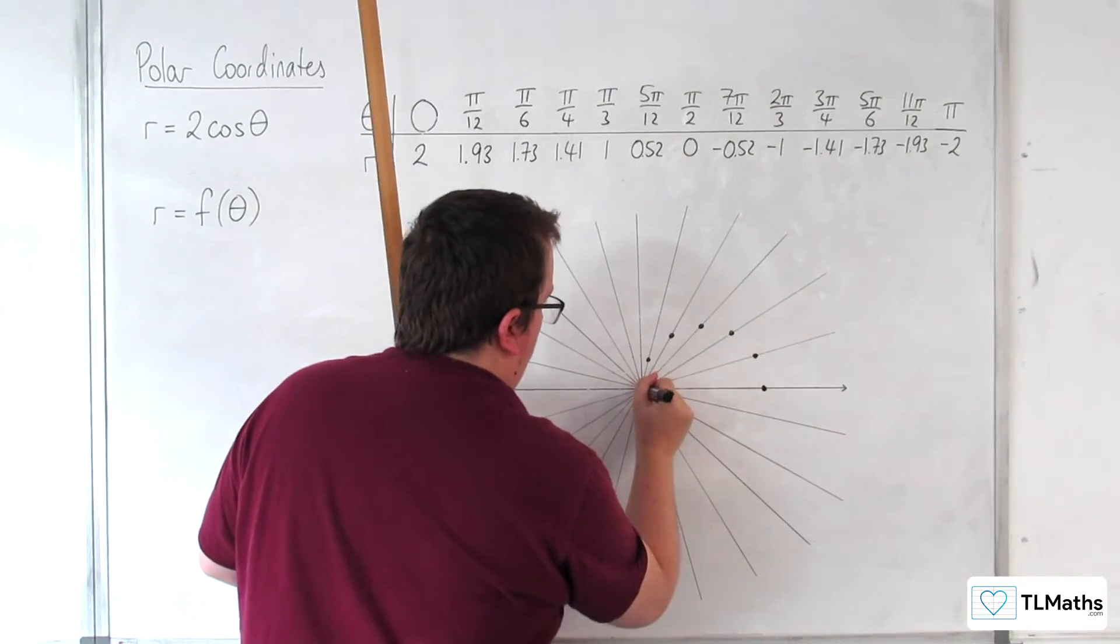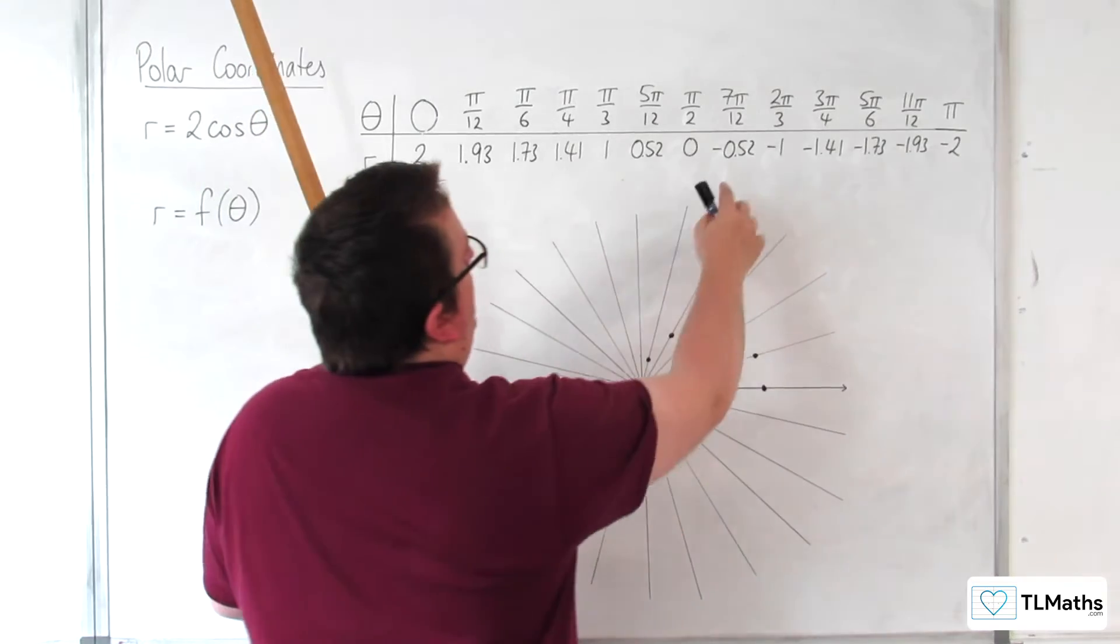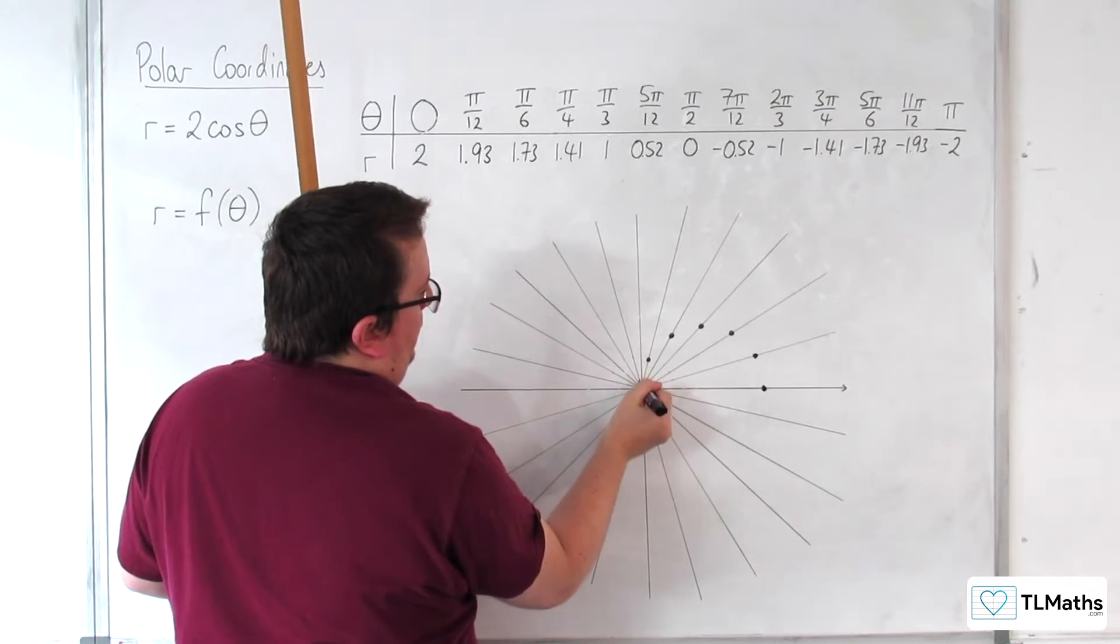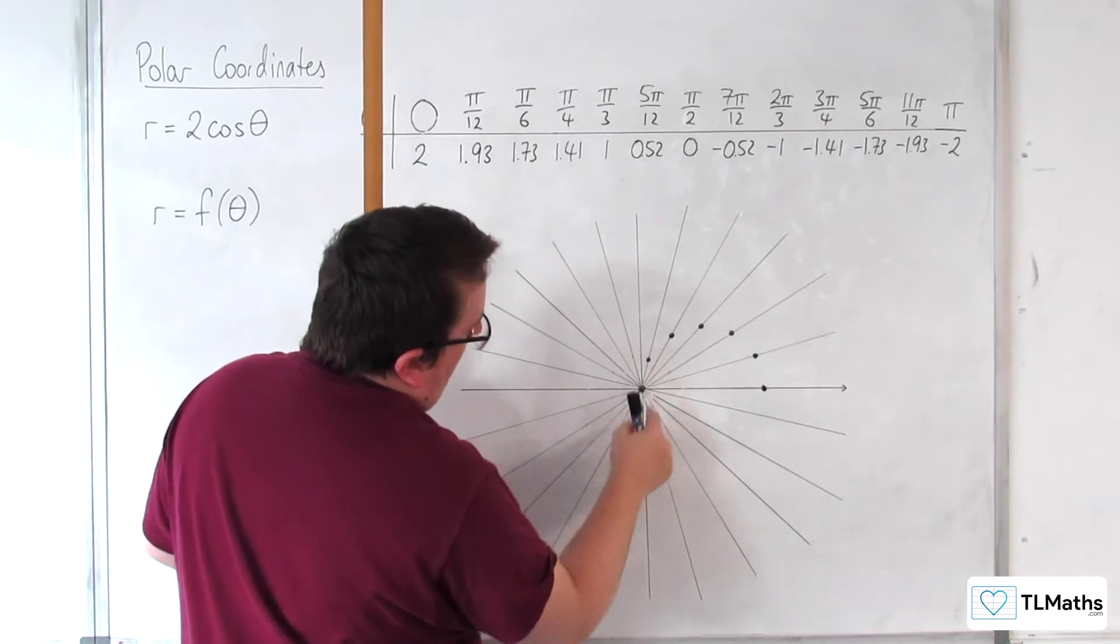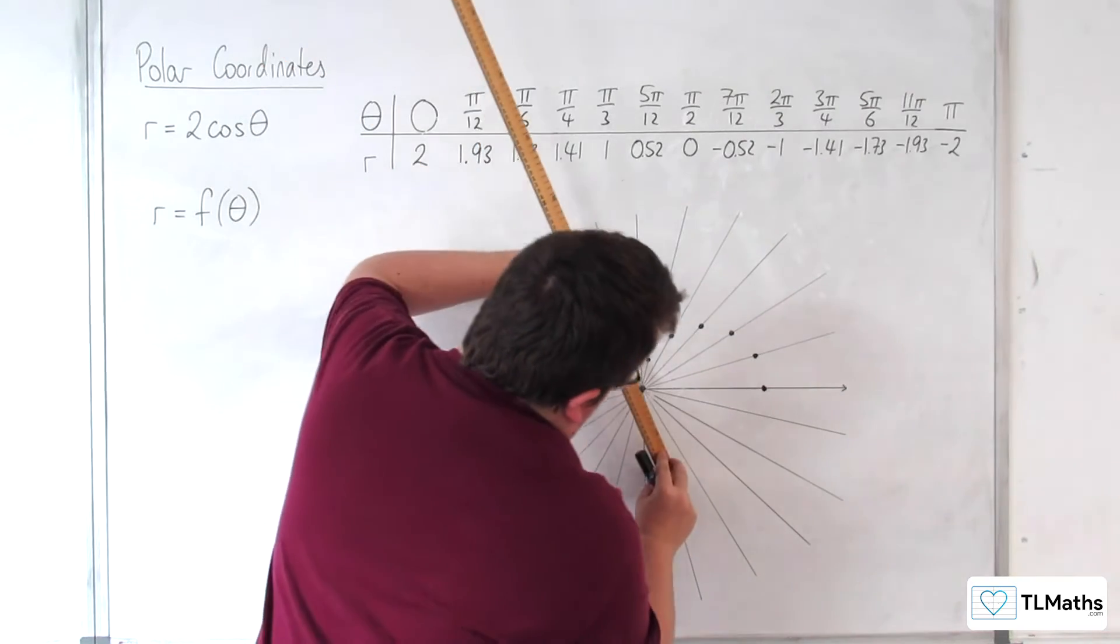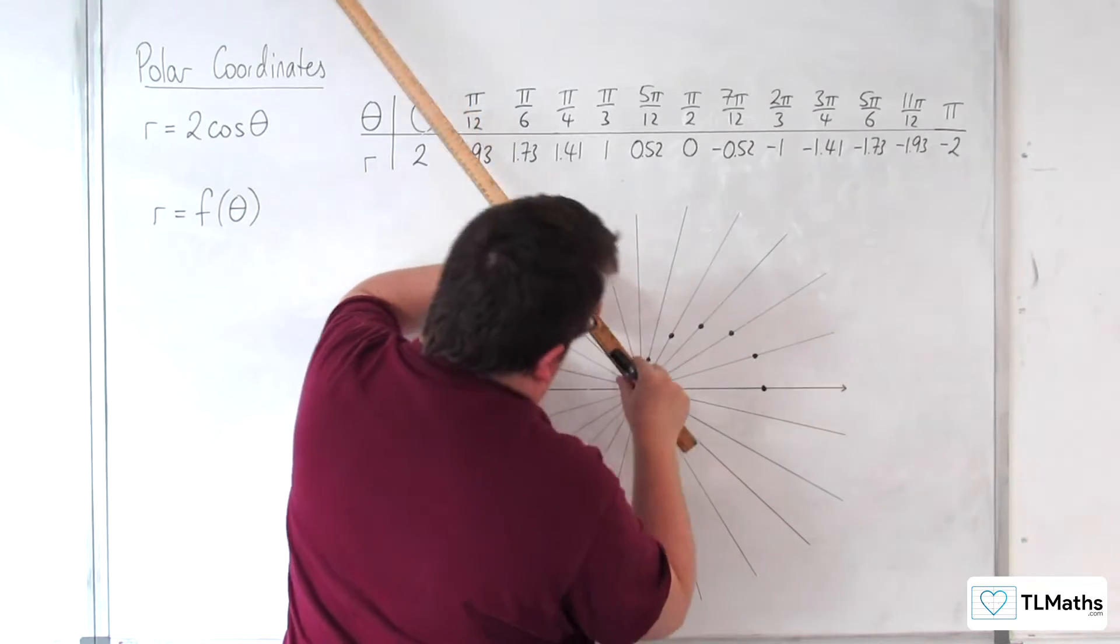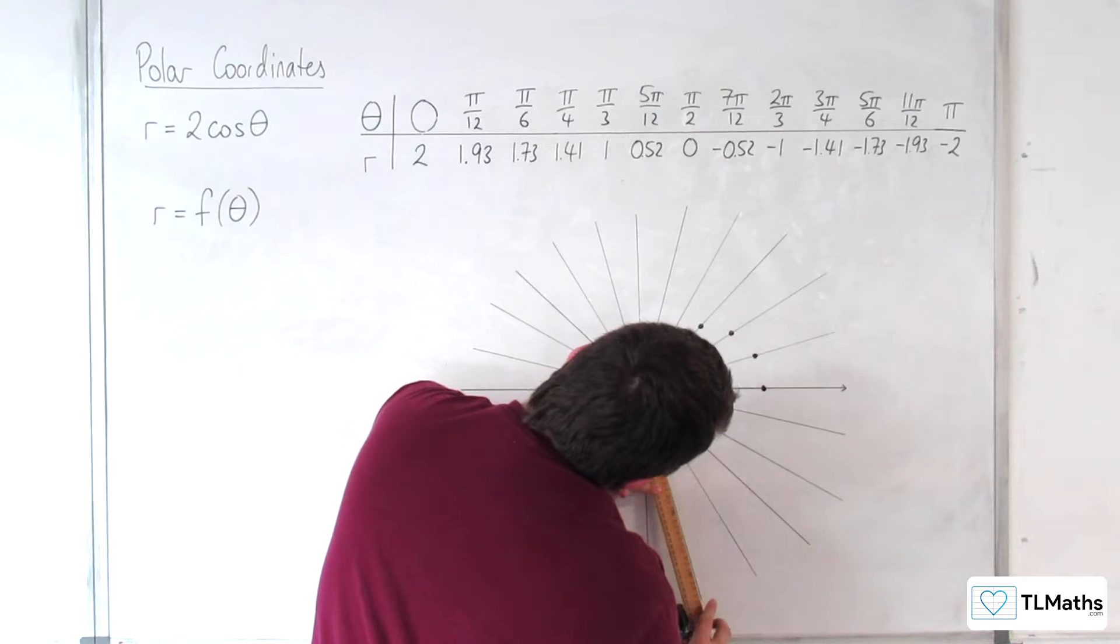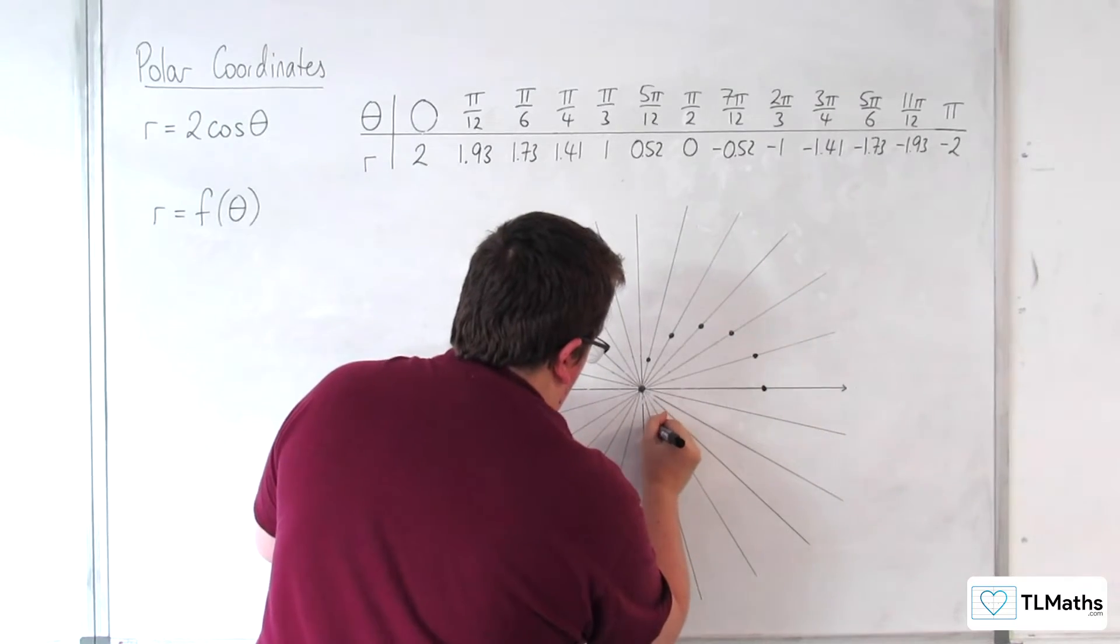Then we've got 0. So I was 0 at that point. Then we've got 7 pi over 12 minus 0.52. Now, the angle of 7 pi over 12 would put us on this line, but because our r is negative, that actually puts us down here on this line. So I need to measure about 0.52 down here. It's about there.